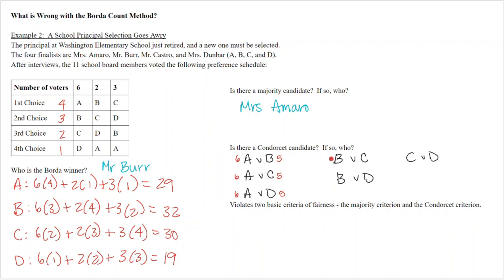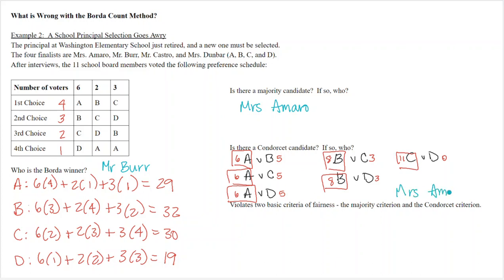We can confirm that Miss Amaro won all of her head-to-head matchups, so Miss Amaro is also our Condorcet candidate. In this example, the Borda Count violates two basic criteria of fairness: the majority criterion and the Condorcet criterion. We have a majority candidate who did not win by the Borda Count, and we also have a Condorcet candidate who did not win by the Borda Count — both of which are problematic.